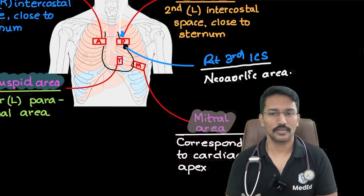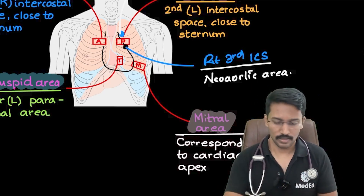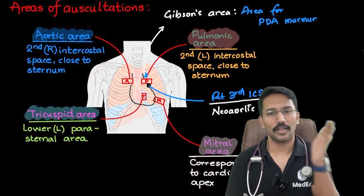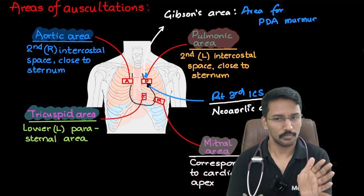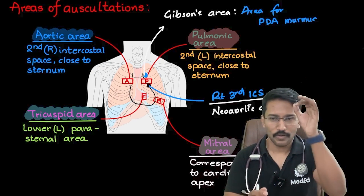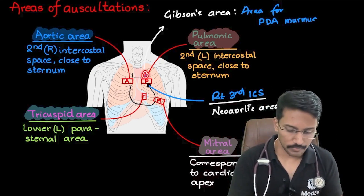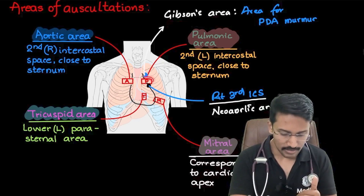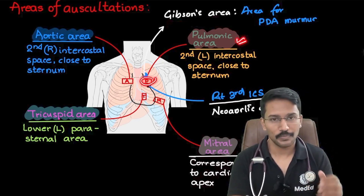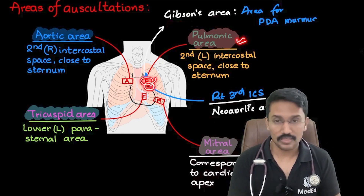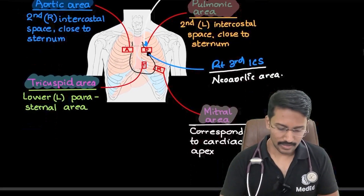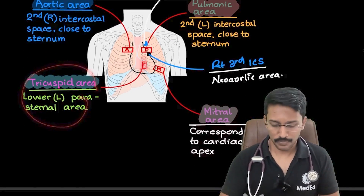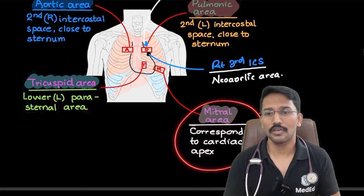How to remember all this? The rule is simple: it is only the aortic area which is on the right side — everything else is on the left side. On the left side, from top to bottom: the first intercostal space is Gibson's area for PDA murmur, second intercostal space is the pulmonic area, third intercostal space is the neo-aortic area, then the lower sternal border is the tricuspid area, and the location of the apex is your mitral area.